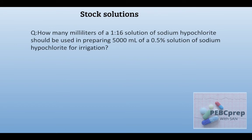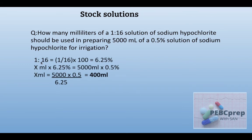Next question: how many milliliters of a 1:16 solution of sodium hypochlorite should be used in preparing 5000 ml of a 0.5% solution of sodium hypochlorite for irrigation? 1:16 multiplied by 100 converts ratio strength to percentage strength, giving 6.25%. We put V1 unknown, C1 = 6.25%, V2 = 5000 ml, C2 = 0.5%, and when calculated we simply get 400 milliliters.